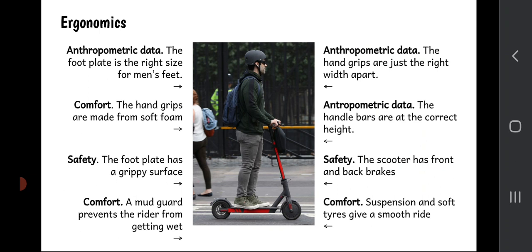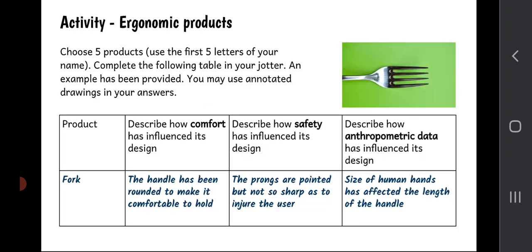OK, let's move on. I've got an activity for you. What I'd like you to do is think about the first five letters of your name and choose five products which start with those letters. So if your name was Fiona or Fraser or something like that, you could choose a fork because it starts with an F, just like I've done here. I want you to complete the following table in your jotter using my example which has been provided. You can use drawings in your answer. This is always true of design and manufacture - if you're better answering a question using a drawing, then you can do that instead of words.